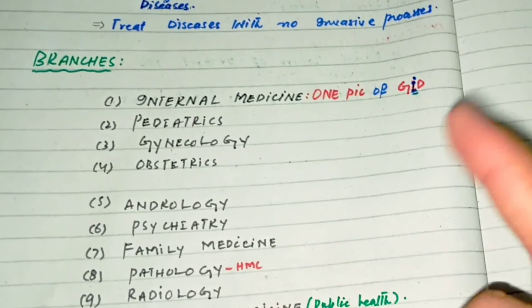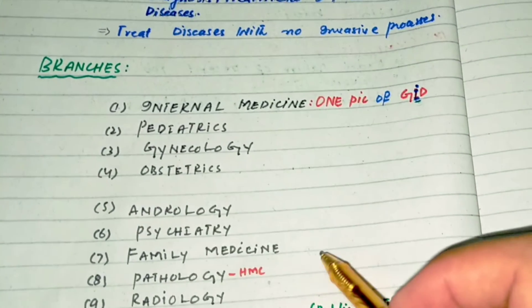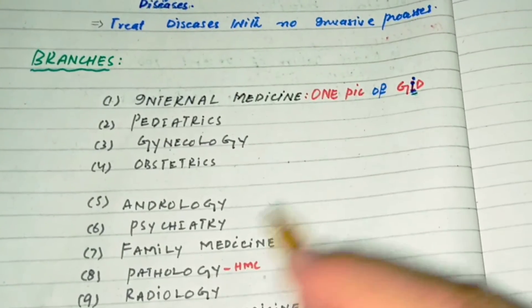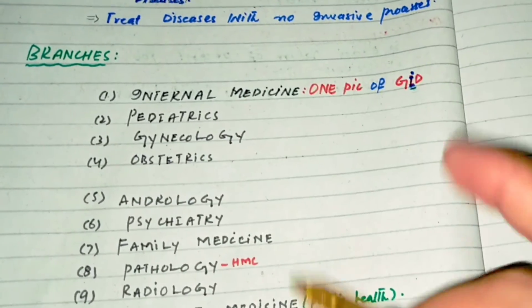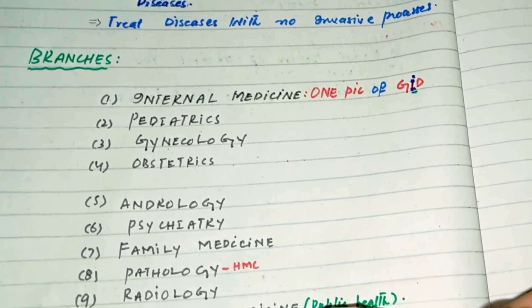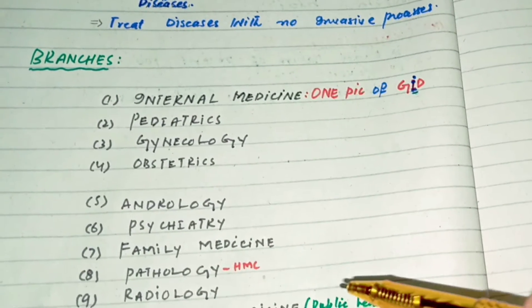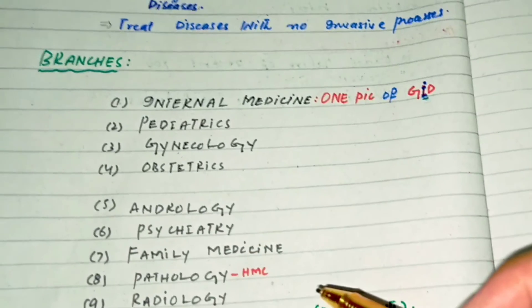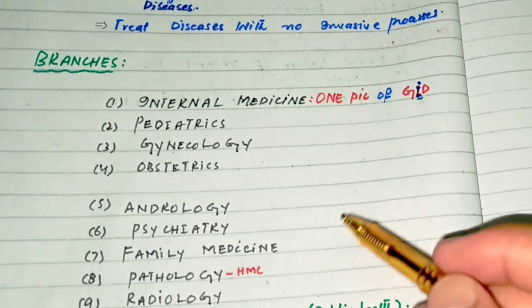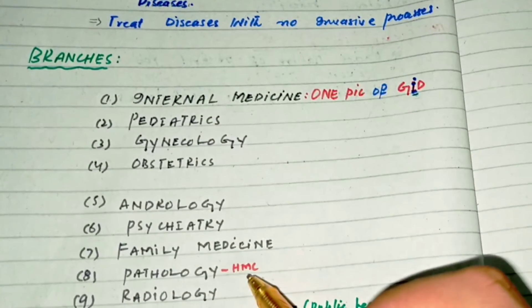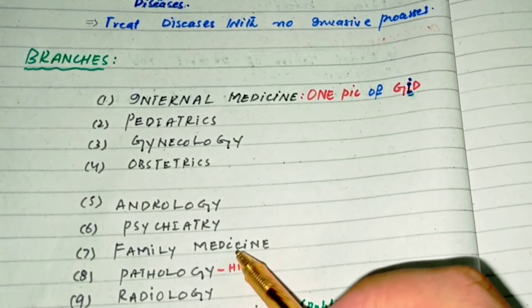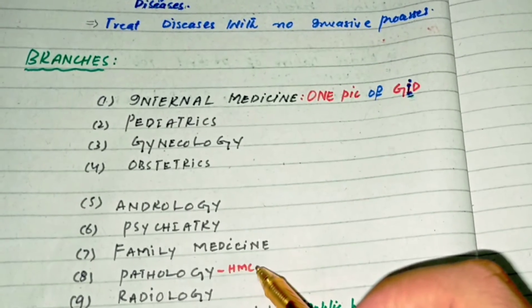The eighth branch of medicine is pathology. Pathology is a unique branch of medicine in which we only study disease and their diagnosis — there is no study of treatment in pathology. Pathology has subspecialties including hematology, histopathology, medical microbiology, and chemical pathology.